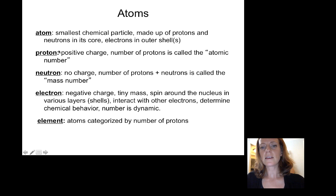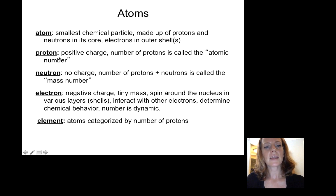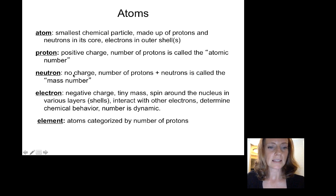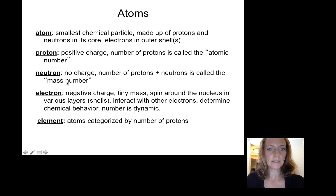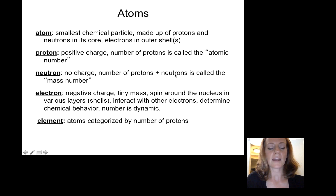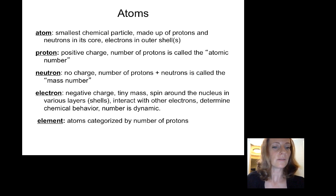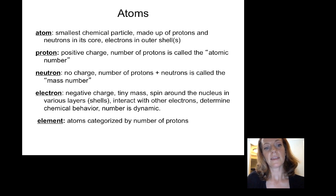The number of protons is called the atomic number, and that depends on the particular atom. A neutron has no charge but it adds mass or particles to the core. When you look at the periodic table, you'll find not just the atomic number but also the mass number at the bottom of each element. The mass number is the number of protons plus neutrons combined. Sometimes there are very few neutrons, sometimes several, so the mass number can be much bigger than the atomic number.